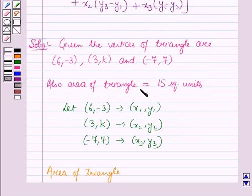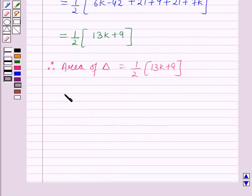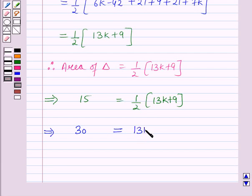Now we have the area of the triangle as 15 square units, so putting this value here, this implies 15 equals ½ times (13k + 9), which further implies 30 equals 13k plus 9.